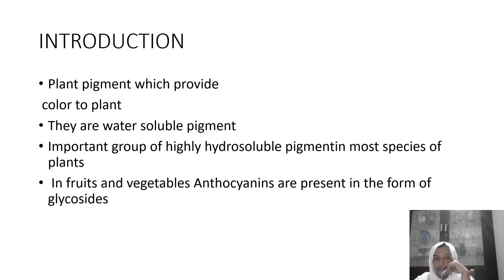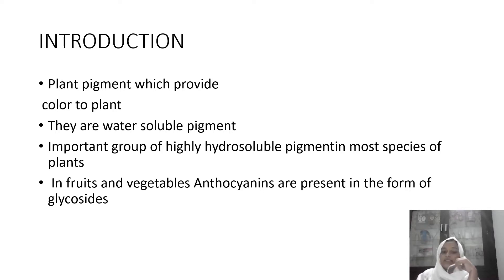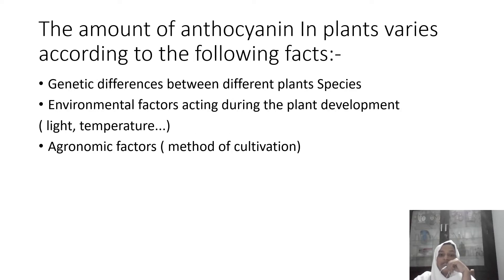This is a natural plant pigment. Anthocyanins is in the form of glycoside — it is the nature of glycoside. The anthocyanin content varies according to the following factors: genetic differences between different plant species, environmental factors, and agronomic factors.